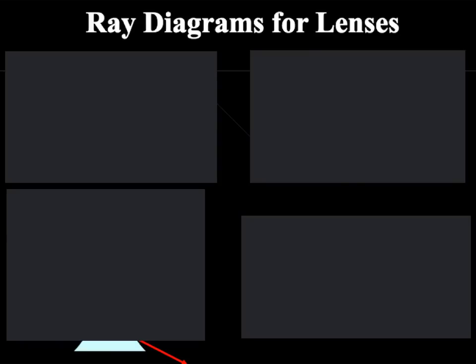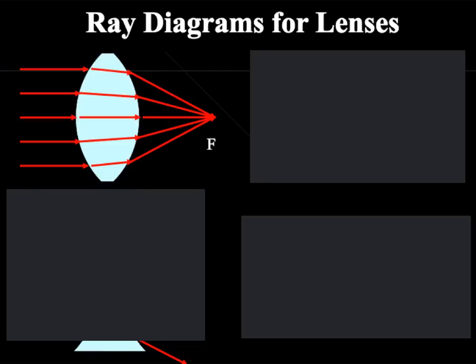It is important to be able to draw a ray diagram for specific lenses. The first one we will look at is for the converging lens. As we can see from the diagram, for the converging lens the light approaches the lens, is refracted and then is focused at point F.